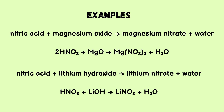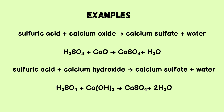For example, nitric acid reacts with magnesium oxide to give magnesium nitrate plus water. Similarly, nitric acid can react with lithium hydroxide to form lithium nitrate and water. Another example: sulfuric acid plus calcium oxide gives calcium sulfate plus water. Sulfuric acid reacts with calcium hydroxide, producing calcium sulfate plus water.